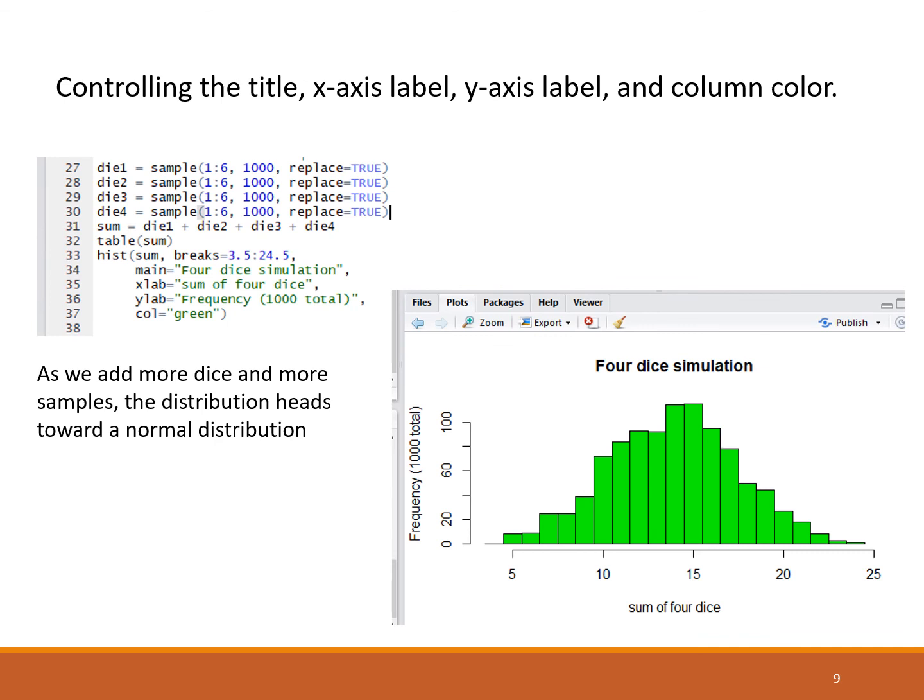Here we go again one more time, but this time we did four dice. Die 1, die 2, die 3, die 4. The sum was die 1 plus die 2 plus die 3 plus die 4. We upped our sample size to 1000. We tabled the sum so we should be able to see down in the console the count of the frequency. Then we made the histogram of the sum of the four dice. The breaks went from possibilities of 4 to 24. We went a little bit less than 4, 3.5, and a little bit more than 24, 24.5. We put in a title, an x label, this time I show it, a y label, and I made the color green.